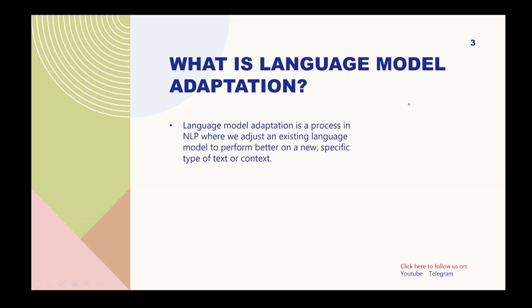Let's say you have ChatGPT — most of you use it for several reasons. ChatGPT is created using language models. These language models are trained on a general dataset. If you ask any question to ChatGPT it will give you an answer, but if you wanted ChatGPT to deliver content in your personal style, you would have to train it — make ChatGPT adapt to your style. That is language model adaptation: taking an existing language model and making changes so it gives you better results.